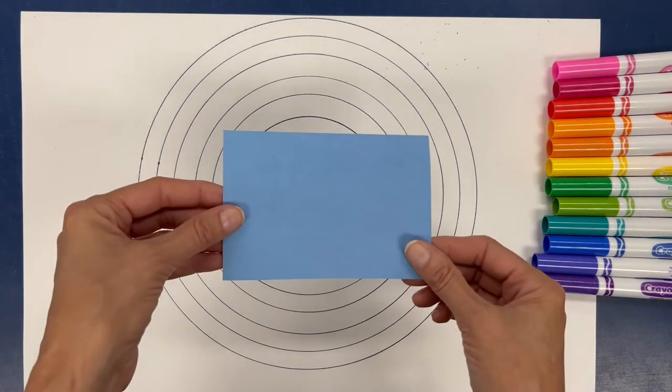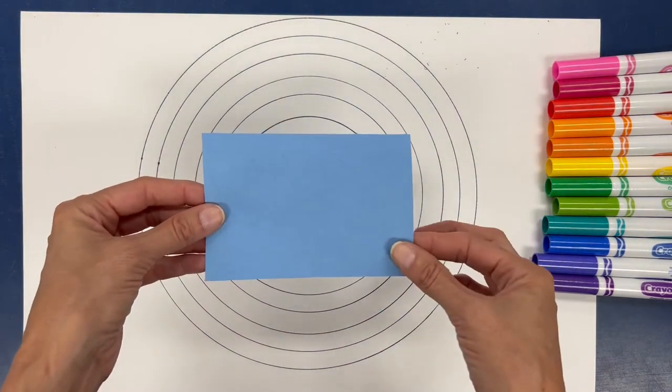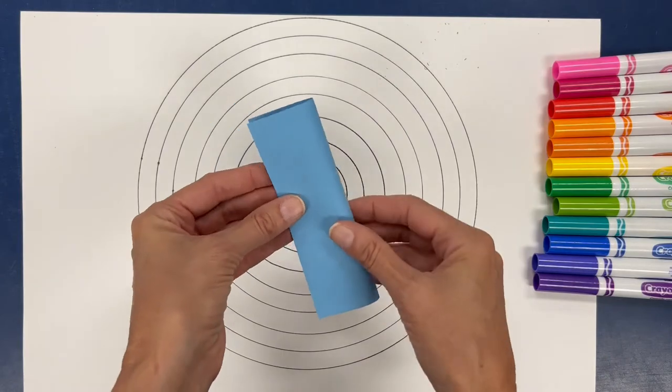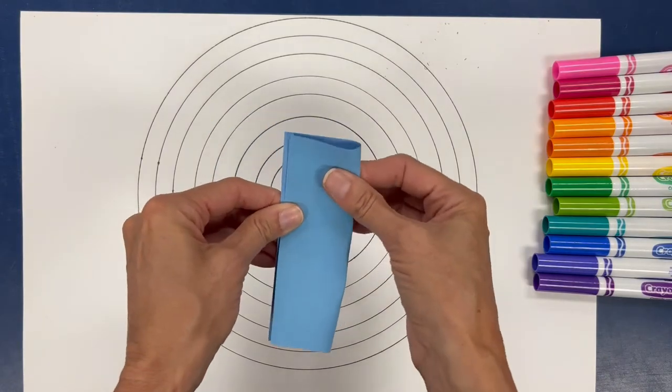So here I have a piece of paper. It's more rectangular. What I'm going to do is fold it in half. It doesn't have to be perfect. Give it a nice crease there.